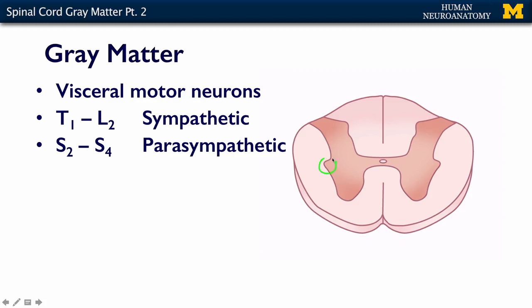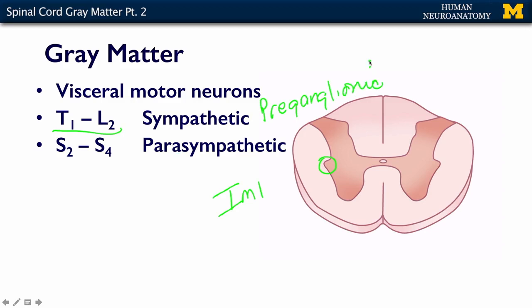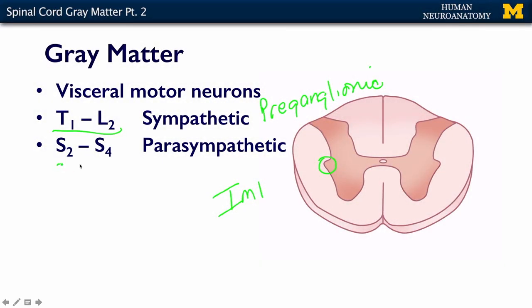The intermediolateral cell column, the IML, is only present in a restricted area of the spinal cord overall. From T1 to L2, it contains the preganglionic neurons of your sympathetic nervous system. From S2 to S4 are the preganglionics of your parasympathetic nervous system. So the neurons here, depending on the level of the spinal cord, are going to be either sympathetic or parasympathetic.